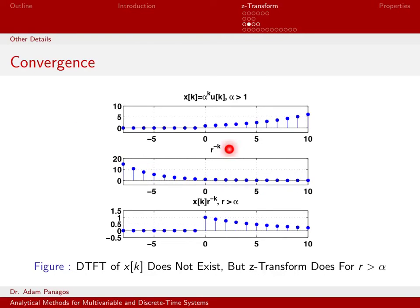So that's what r to the negative k looks like. If I take the product of x of k times r to the minus k and plot that, what do I get? I get this bottom figure right here. This is just the product, element-wise product of this signal with this signal. Notice that x of k is actually equal to zero for negative time. So I'm taking zeros times this thing that's blowing up gives me zeros.